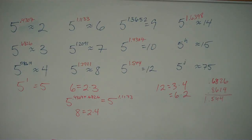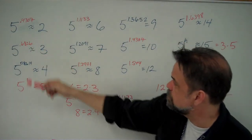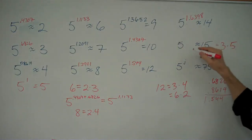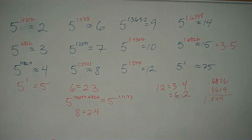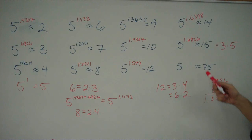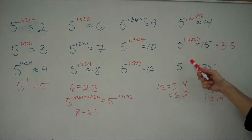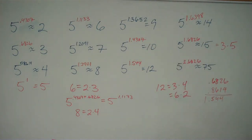Now, 5 to the h is 15. Well, 15 is 3 times 5, so I'll take 5 to the 0.6826 times 5 to the 1, and I get 5 to the 1.6826 power. And the last one: 5 to the something equals 75. This is the easiest one — I just did 15, and 15 times 5 is 75. So all I have to do is multiply 5 to the 1.6826 times 5 to the 1, and I get 5 to the 2.6826. And we are done.